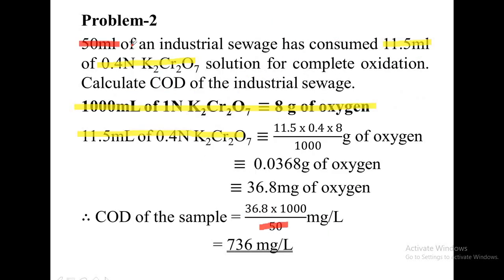Problem number 2 is a different type. Here it is given: 50 ml of an industrial sewage has consumed 11.5 ml of 0.4 normal potassium dichromate solution for complete oxidation. Calculate the COD of the industrial sewage. Here they have not given any information about FAS solution, unreacted potassium dichromate, or blank titration.